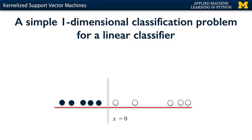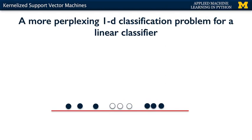If we gave this problem to a linear support vector machine, it would have no problem finding the decision boundary that gives the maximum margin between points of different classes. Here I've engineered the data points so that the maximum margin decision boundary happens to be at x equals zero. Now suppose we gave the linear support vector machine a harder problem where the classes are no longer linearly separable. A simple linear decision boundary just doesn't have enough expressive power to classify all these points correctly.